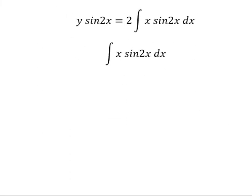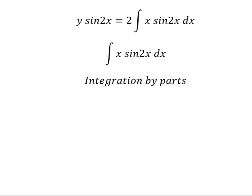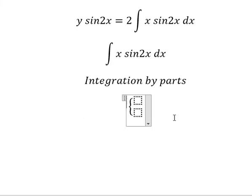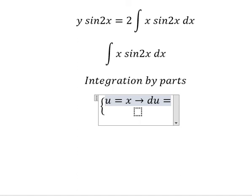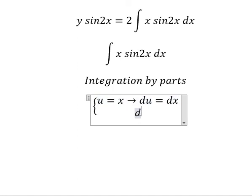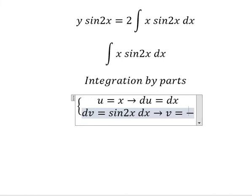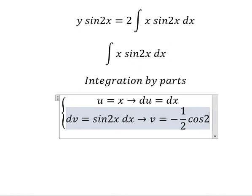So we can use integration by parts. I will set u equals to x, and then take the first derivative of both sides. dv is sin(2s) dx. The integration of that gives us negative 1 over 2 cos(2s).